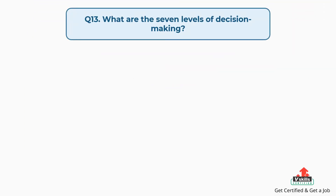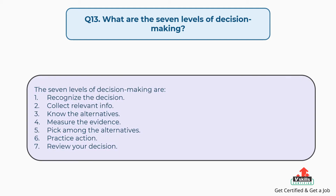Question number 13: what are the seven levels of decision making? The answer is, the seven levels of decision making are: first, recognize the decision; then, collect relevant information; next, know the alternatives; after that, measure the evidence; then, pick among the alternatives; practice action; and lastly, review your decision.